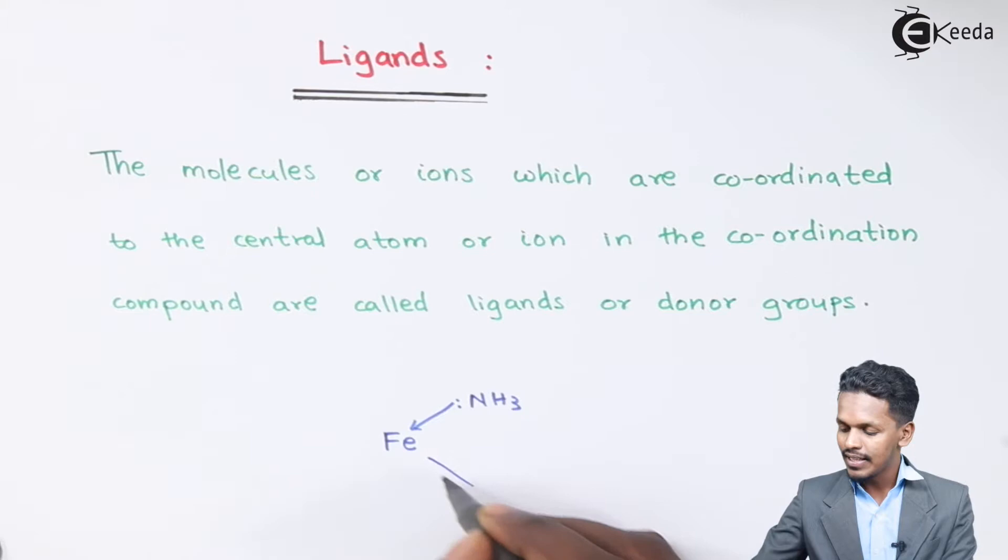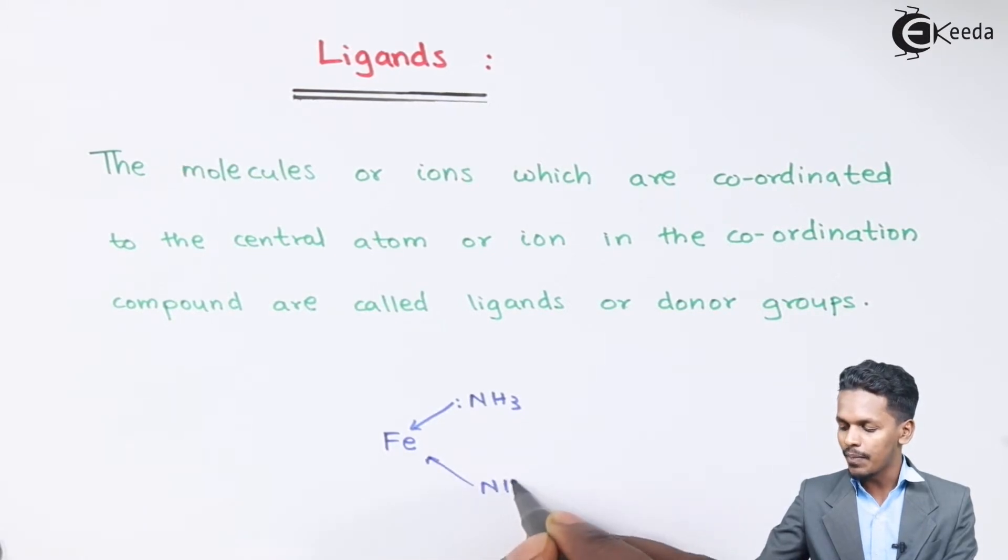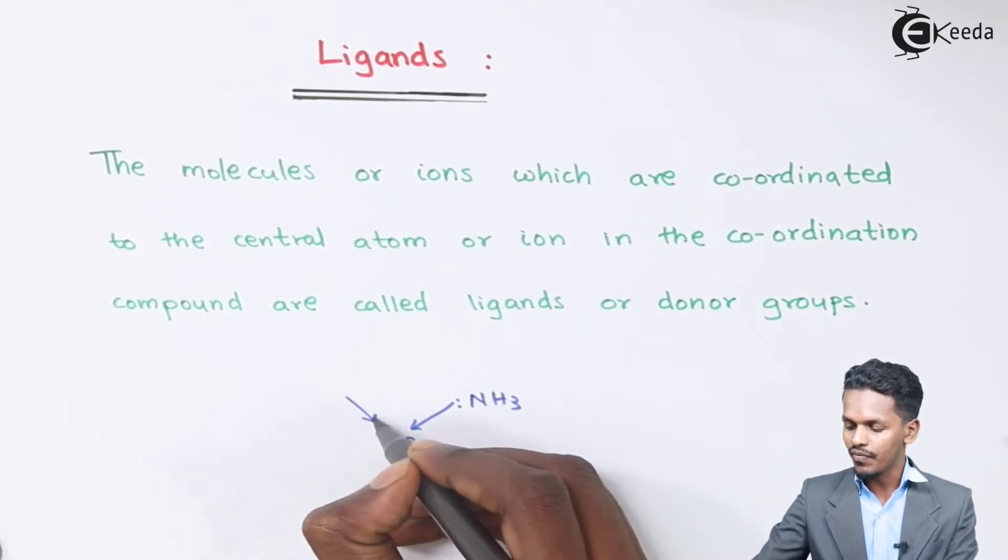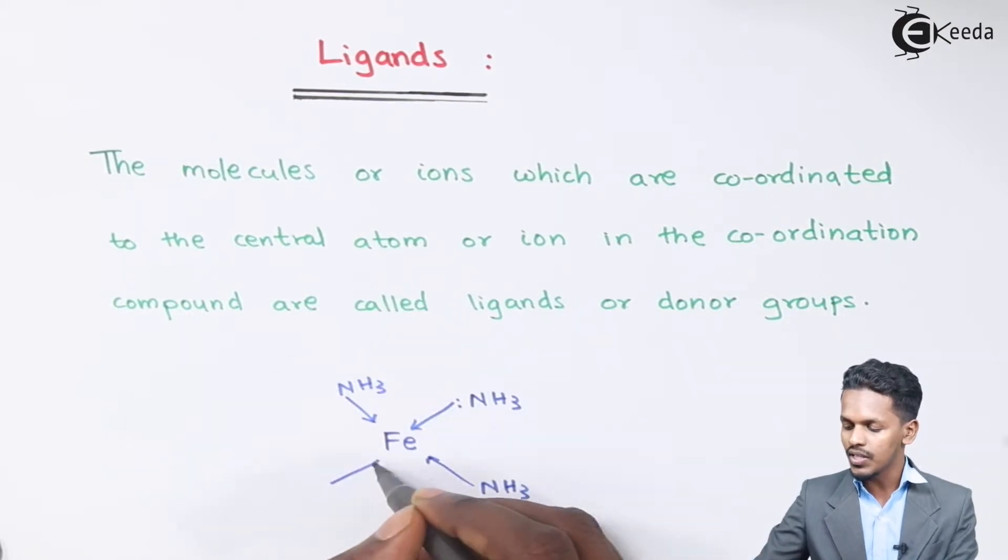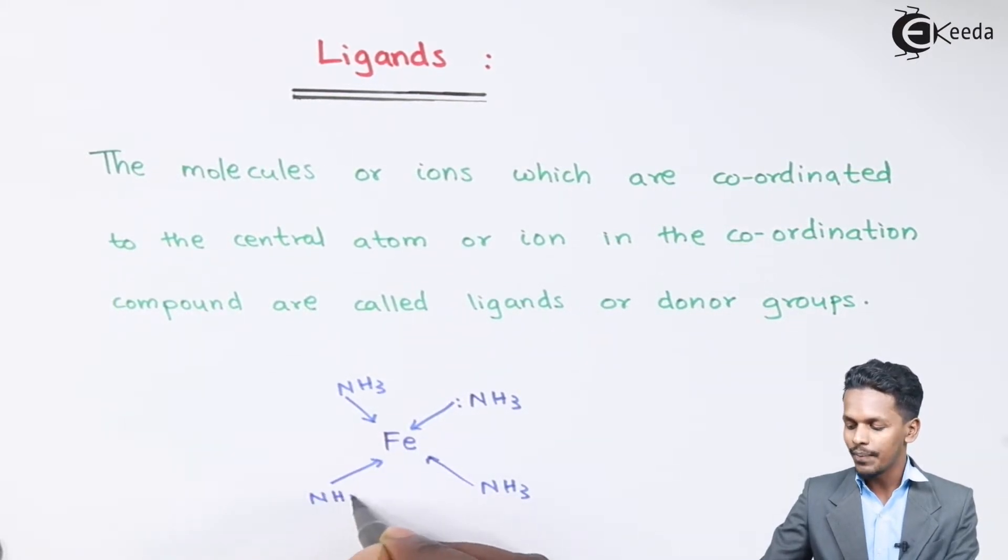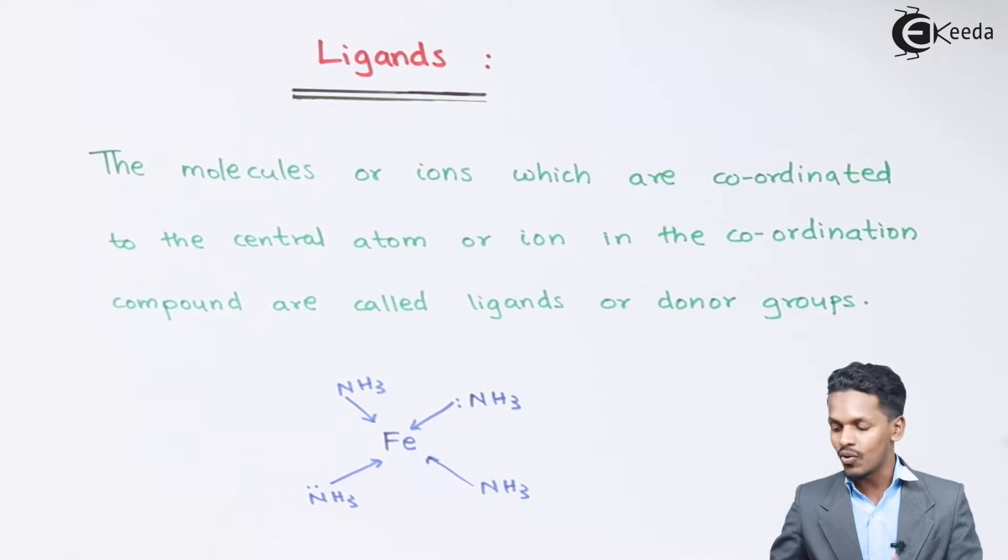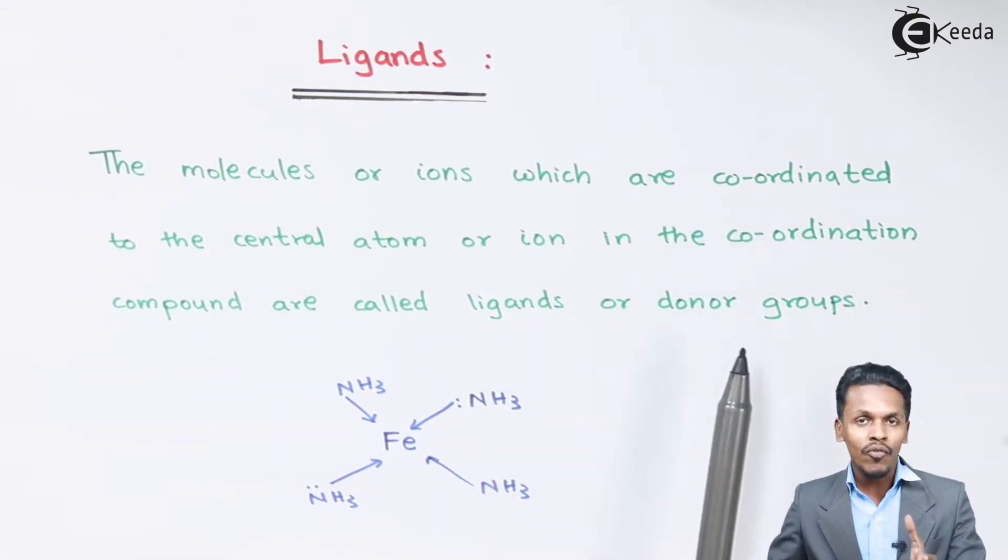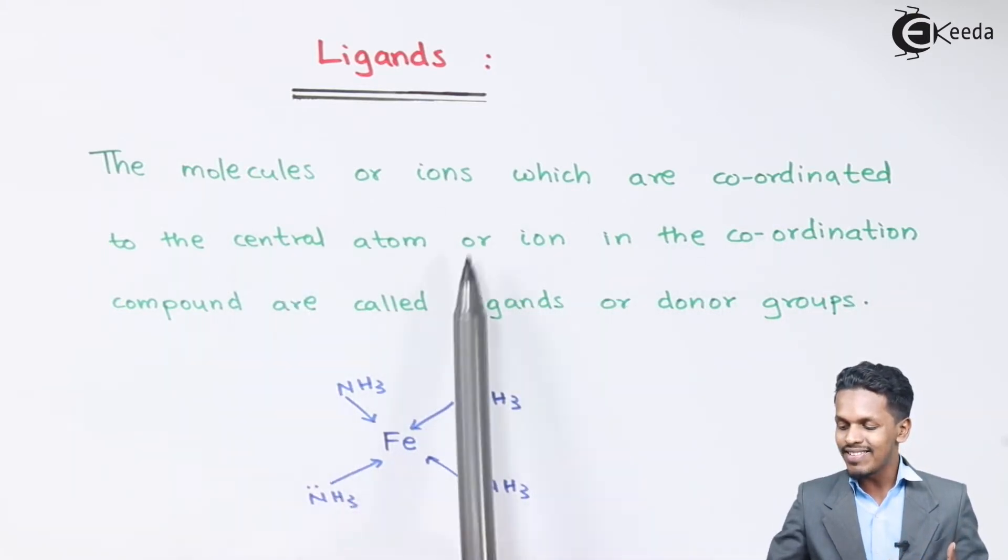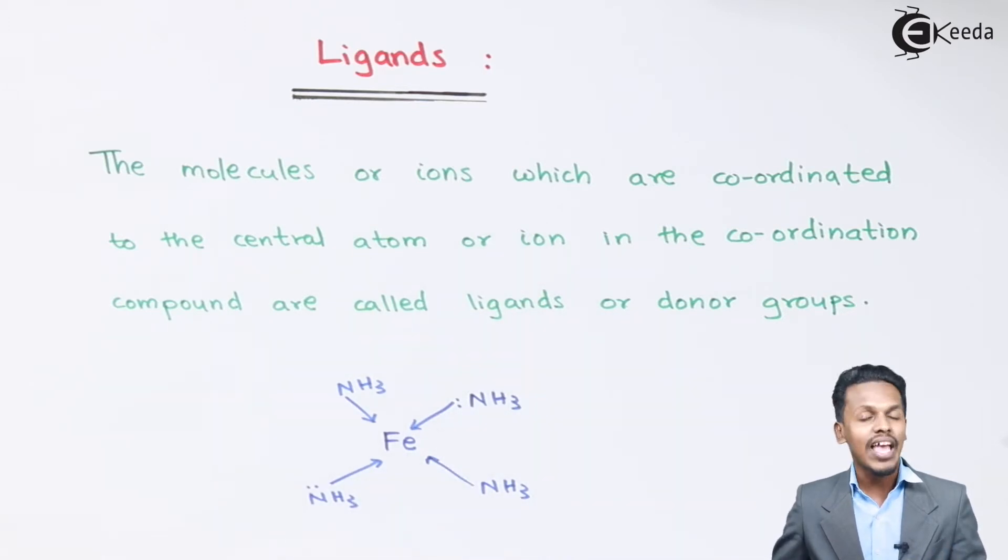So in that case, this is one of the example that I am just showing over here where these are the groups, these are the certain groups which have the capacity to donate the lone pair of electrons. That's the reason they are known as donor groups which is also known as ligands. So they all are donating the lone pair of electrons to the central atom and in this case it is Fe.